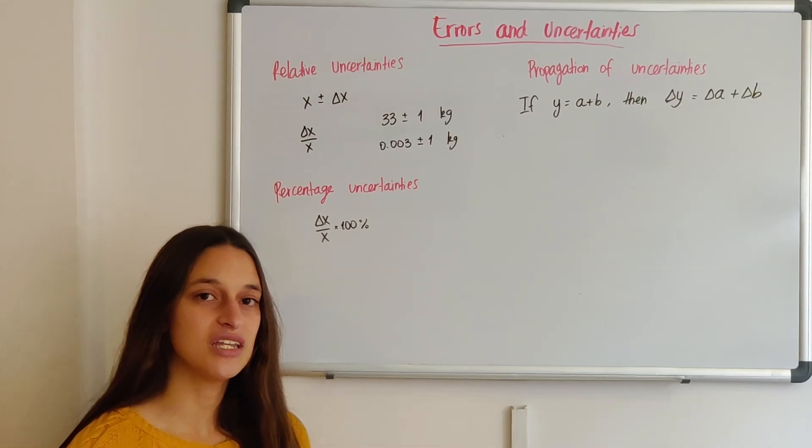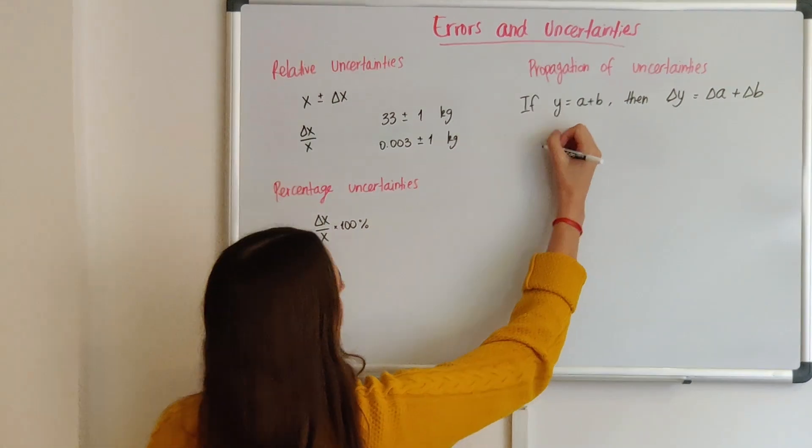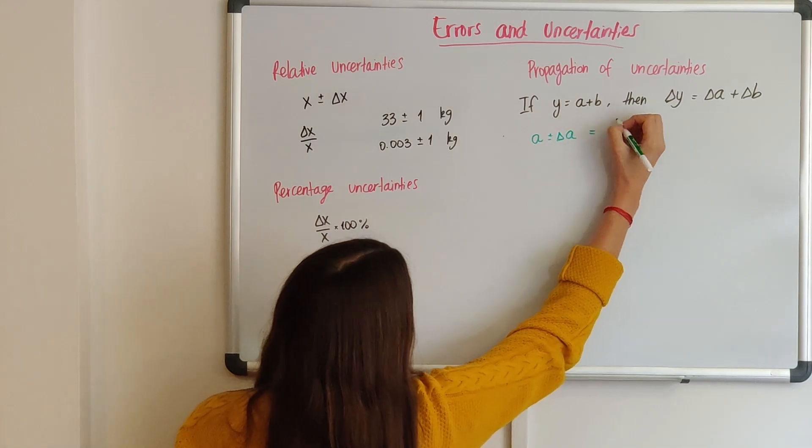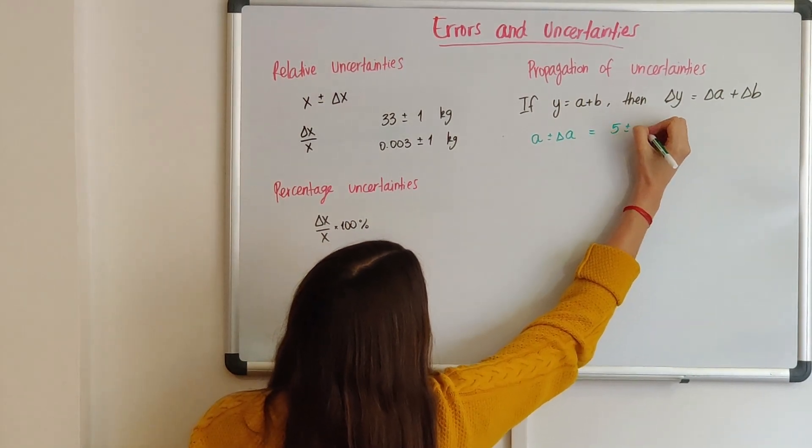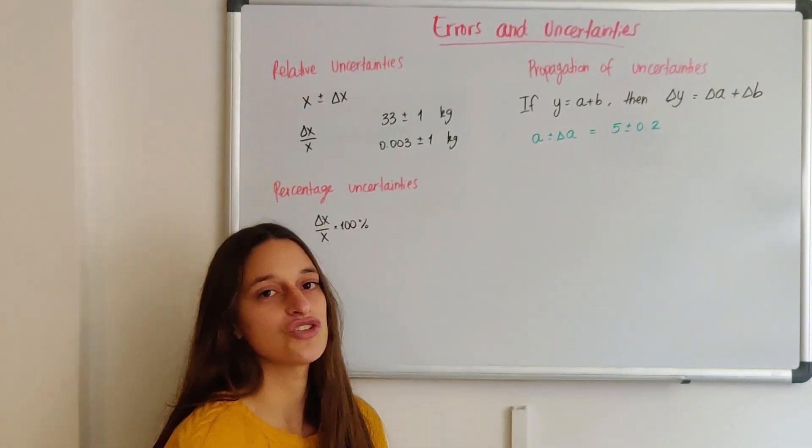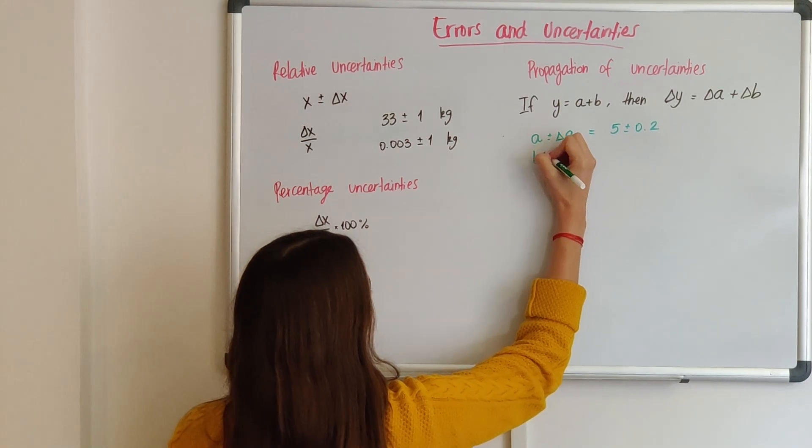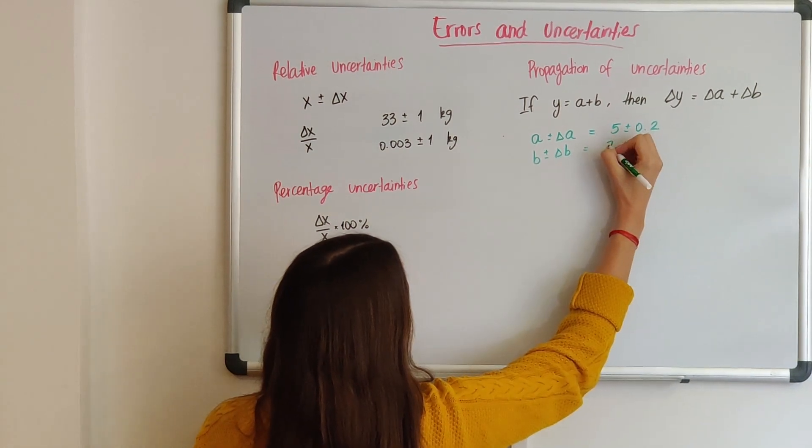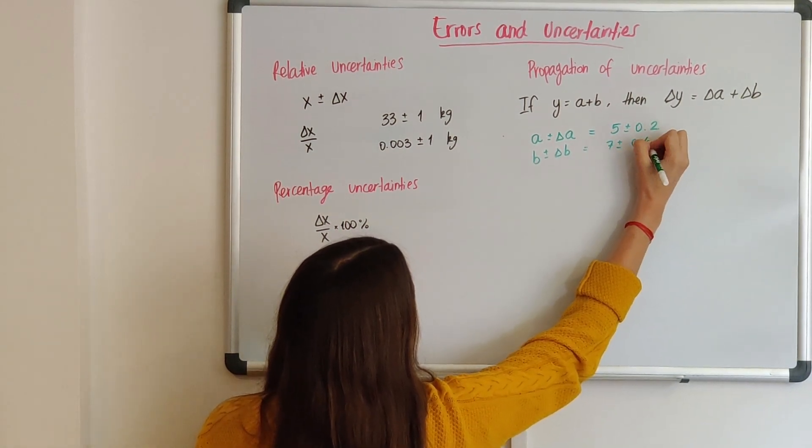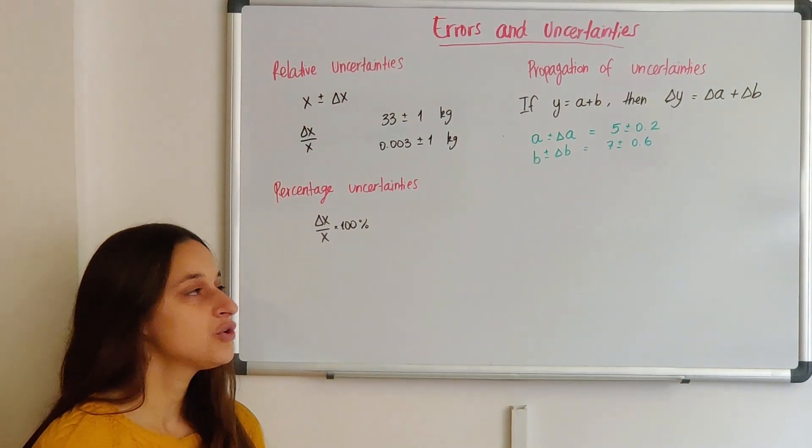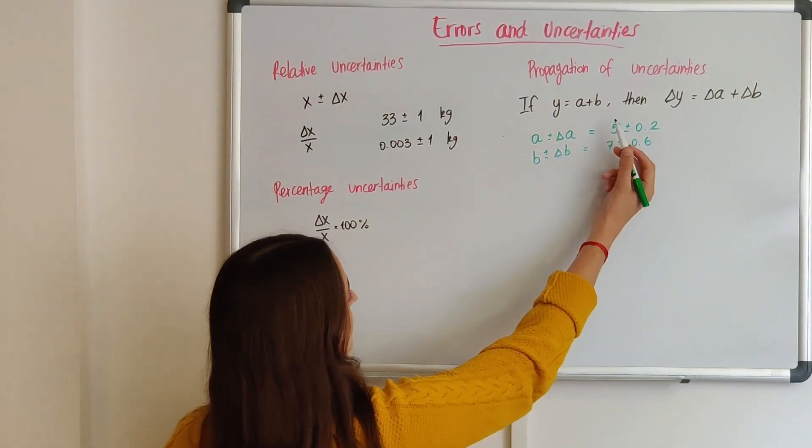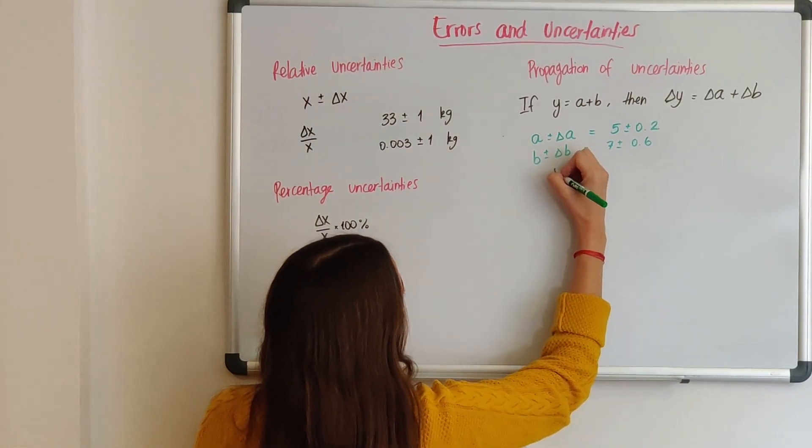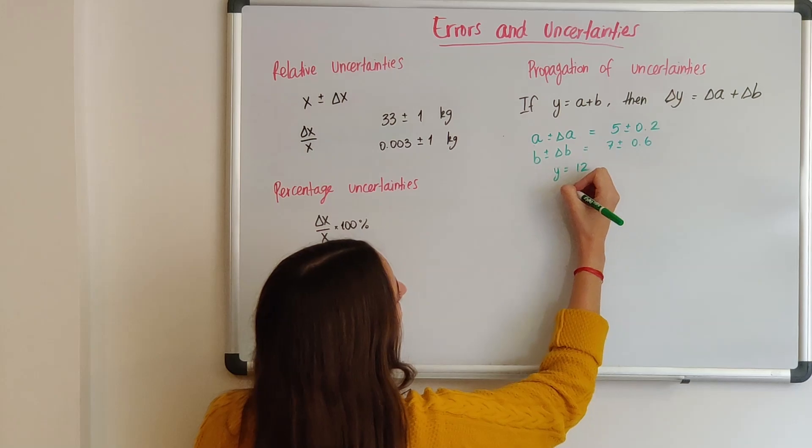It means that you did your experiment and you measured a value a. Let's say you got that a plus or minus delta a equals 5 plus or minus 0.2. And then you measured another value b, and you got that b plus or minus delta b is equal to 7 plus or minus 0.6. You know that y equals a plus b. That means that y is 5 plus 7, which is 12.